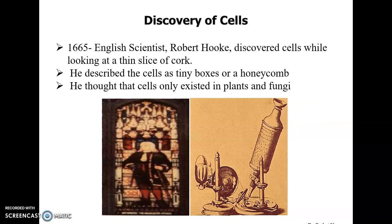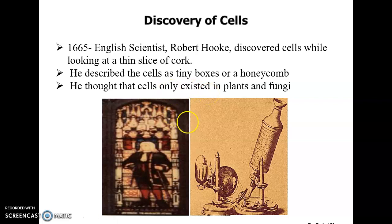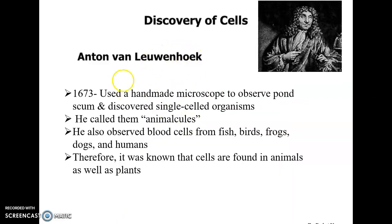If we talk about the discovery of cells — in 1665, English scientist Robert Hooke first discovered cells while looking at a thin slice of cork. He described cells as tiny boxes like a honeycomb, and he thought that cells only exist in plants and fungi. In 1673, another scientist, Antony van Leeuwenhoek, used a handmade microscope to observe pond scum and discovered single-cell organisms, calling them animalcules.